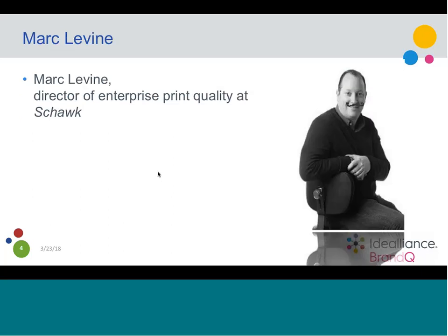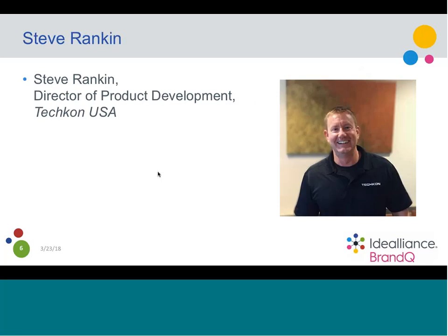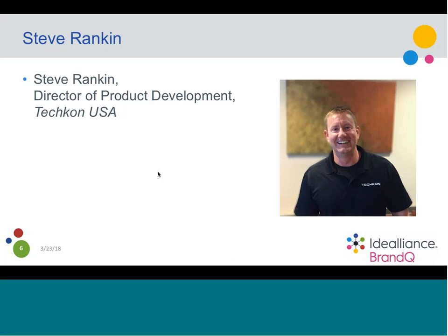Our panelists today are Mark Levine, director of enterprise print quality at Shock — one of the most knowledgeable people about brand issues. Prior to Shock he was at X-Rite, and before that at Monaco and NOR. We also have Steve Rankin, director of product development at Tescon USA. Like Mark, he has deep experience — he worked at X-Rite, Monaco, and EFI. These guys have a really deep color background and are excellent for these topics.